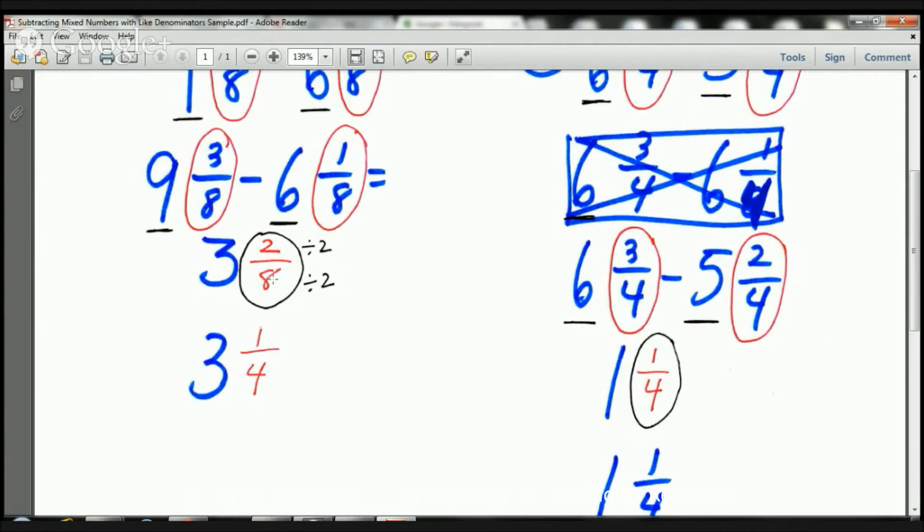So we've got the same denominator. We bring that down. Our 8's right there. And then I subtract 3 from 1 or 1 from 3. 3 take away 1 is 2. So 3 take away 1 is 2. So I have 3 and 2 8's.